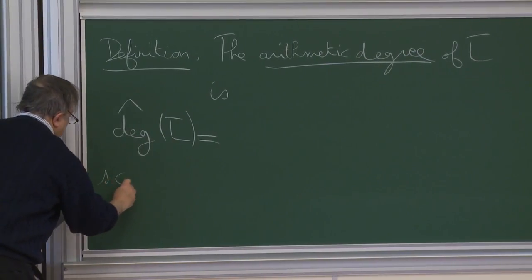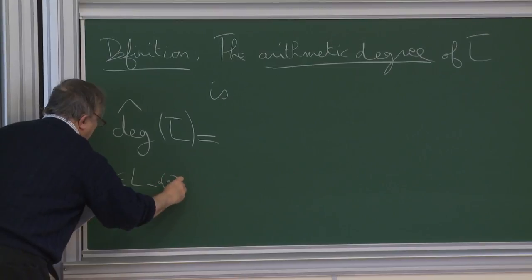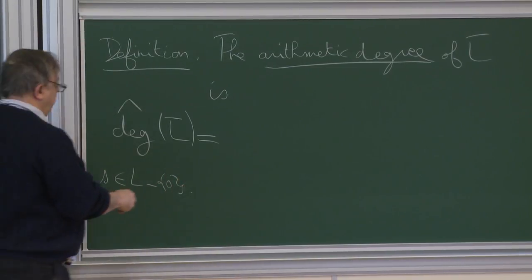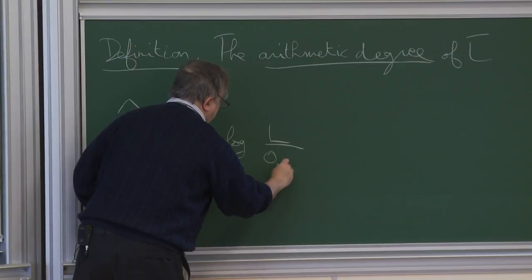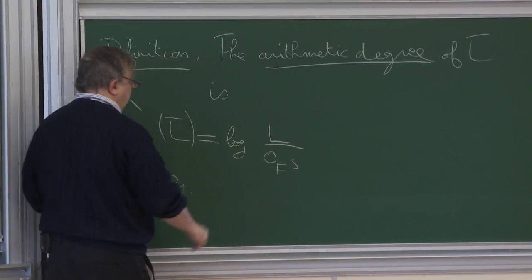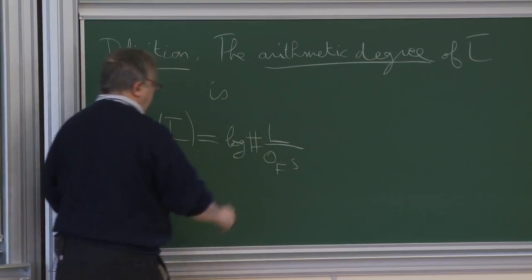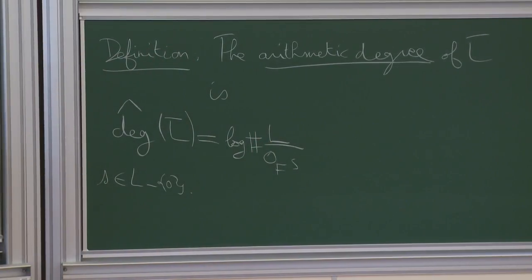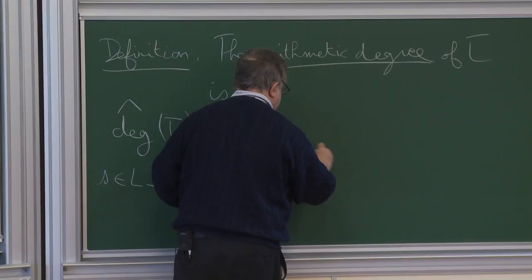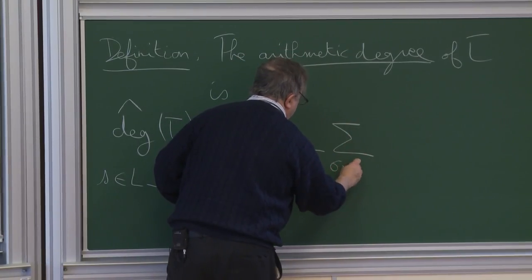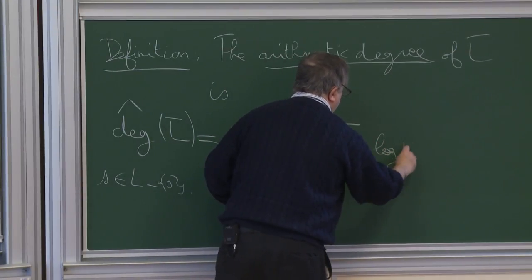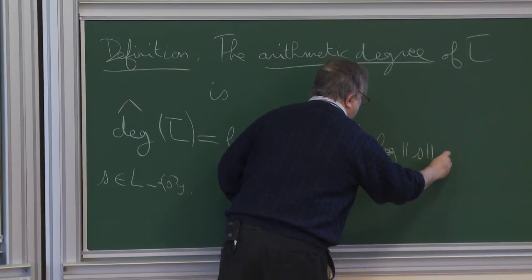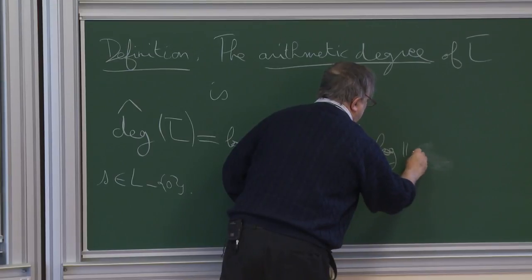We choose S, a non-zero element in L. We look at L divided by the line bundle spanned by S — this is just a finite group — so we can take the cardinality of this finite group and the log of this cardinality. This is one part of the degree. We subtract from this, for all complex embeddings, the log of the norm of S, which we call norm of sigma(S).